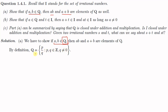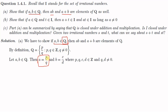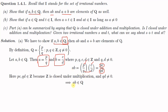If a and b are elements of Q, then a = p/q where p, q ∈ ℤ and q ≠ 0, and b = c/d where c, d ∈ ℤ and d ≠ 0. First we check for ab. Now ab = (p/q)(c/d) = pc/qd. Since p and c are integers, pc is also an integer. Similarly q and d are integers with q ≠ 0 and d ≠ 0, so qd is also a non-zero integer. Thus ab = pc/qd, where pc is an integer and qd is a non-zero integer, so by the definition of Q, ab is an element of Q.